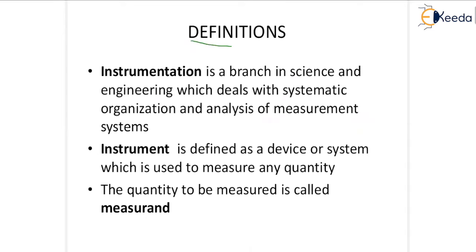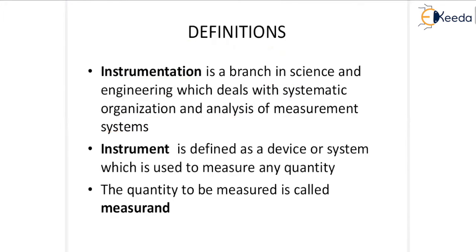Now let's look at some basic definitions of Sensors and Industrial Instrumentation. The first one is instrumentation. What is instrumentation? It's a branch of science and engineering which deals with the systematic organization and analysis of measurement systems — that means it is the study of measuring systems in a systematic organization and analysis.